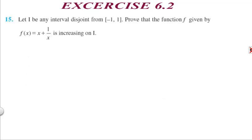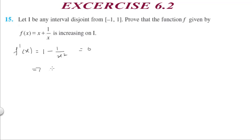Question 15: Prove that f(x) = x + 1/x is increasing on any interval disjoint from [-1, 1]. The derivative is f'(x) = 1 - 1/x². Setting f'(x) = 0 gives x² = 1, so x = ±1. These two critical points are plotted on the number line.